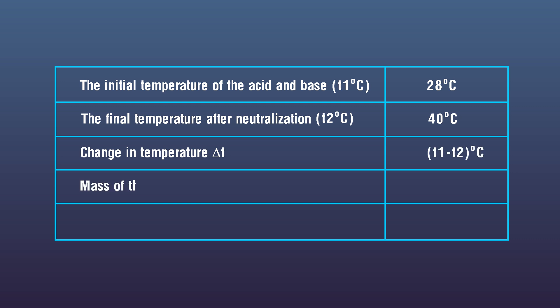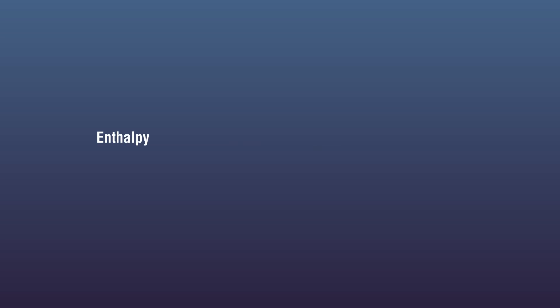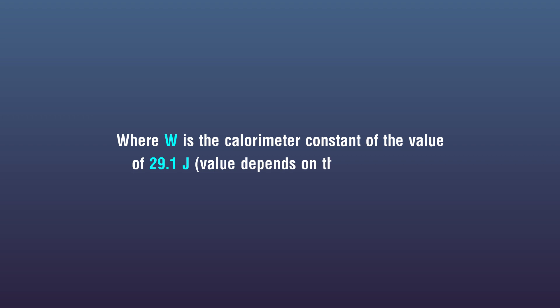Calculation: Enthalpy change during neutralization of 100 milliliters of 1 molar HCl equals 200 multiplied by W multiplied by T1 minus T2 multiplied by 4.18, where W is the calorimeter constant with a value of 29.1 joules. The value depends on the calorimeter.